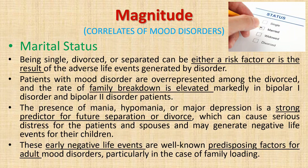Regarding marital status, being single, divorced, or separated can be either a risk factor or result of the adverse life effects of the illness — this relationship is bidirectional. Lacking good social support may lead to earlier onset of the disorder, or the disorder itself may hamper a person's life and lead to divorce or separation. Family breakdown is elevated markedly in bipolar 1 and 2 disorders and is a strong predictor for future separation or divorce, which can also affect the children. Early negative life events are well-known predisposing factors for adult mood disorders.